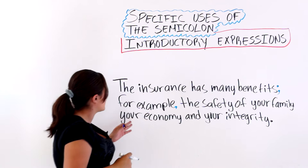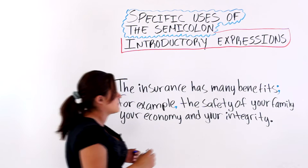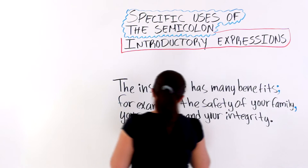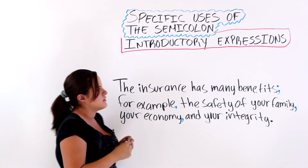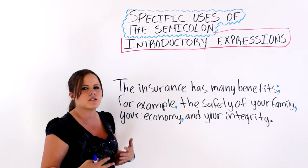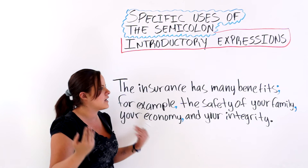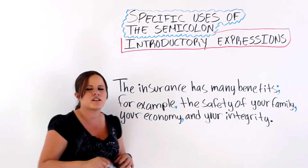It's a small pause — for example, the safety of your family, your economy, and your integrity. You'll notice there are additional pauses within the list, so we use commas there. Remember, the semicolon is stronger than a comma but a little bit lighter than a period — it is a pause, but not as long as a period and not as short as a comma.